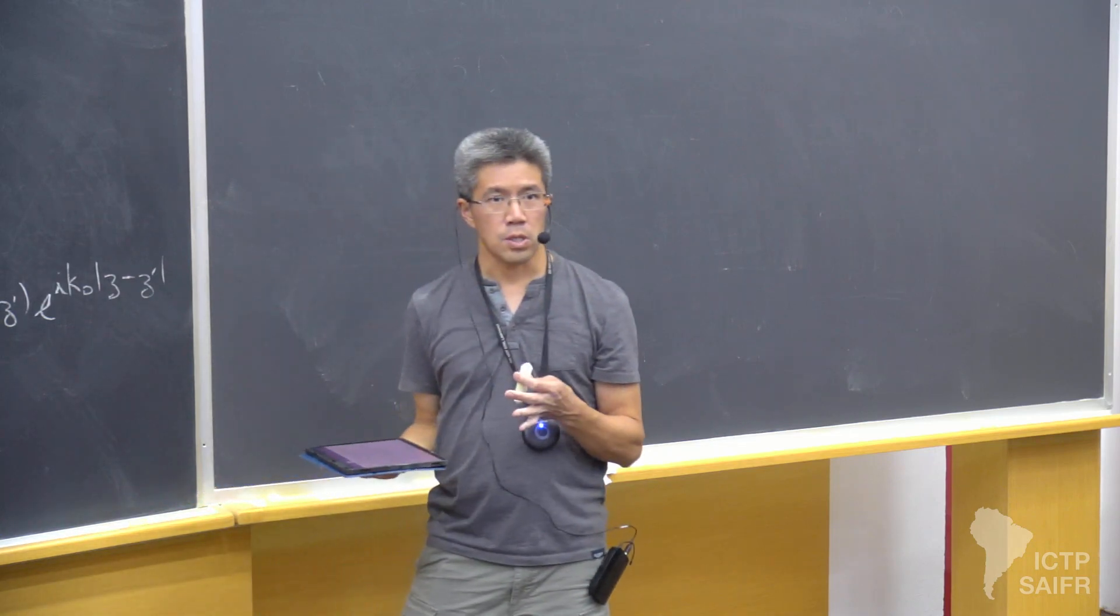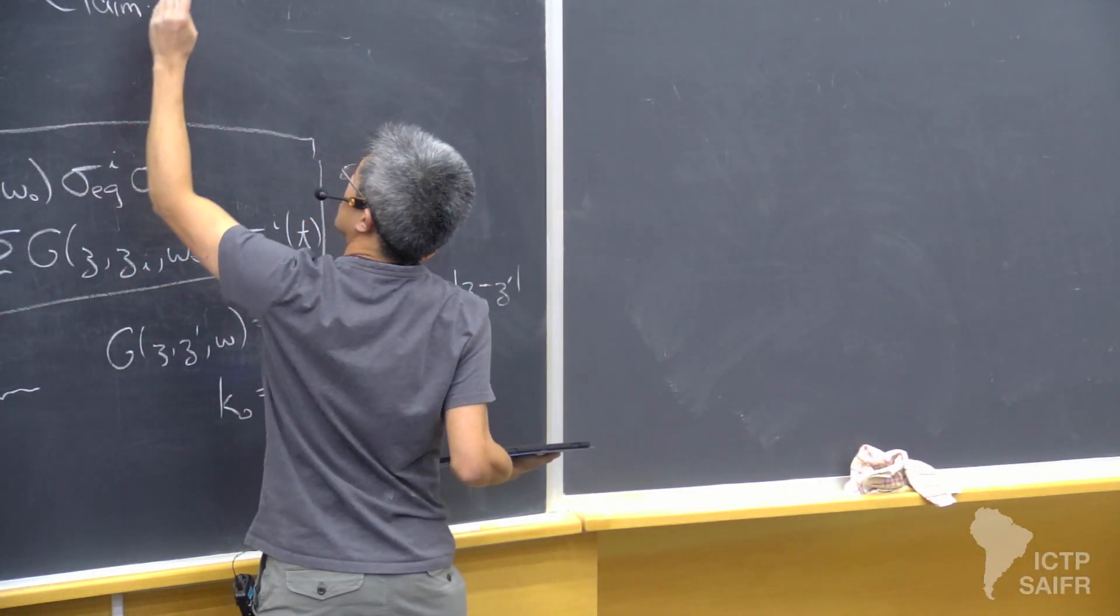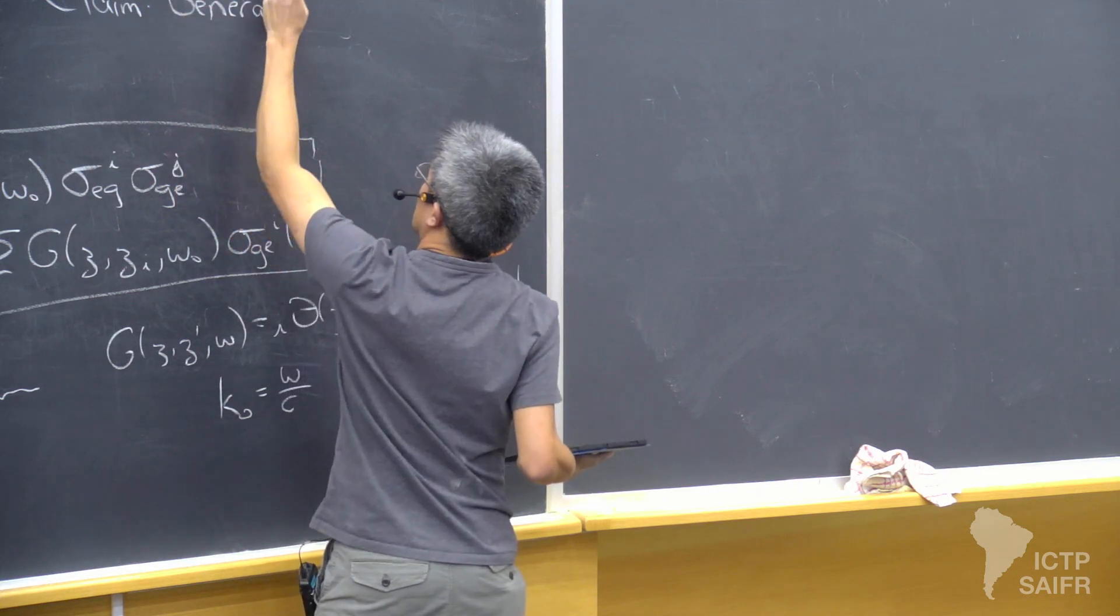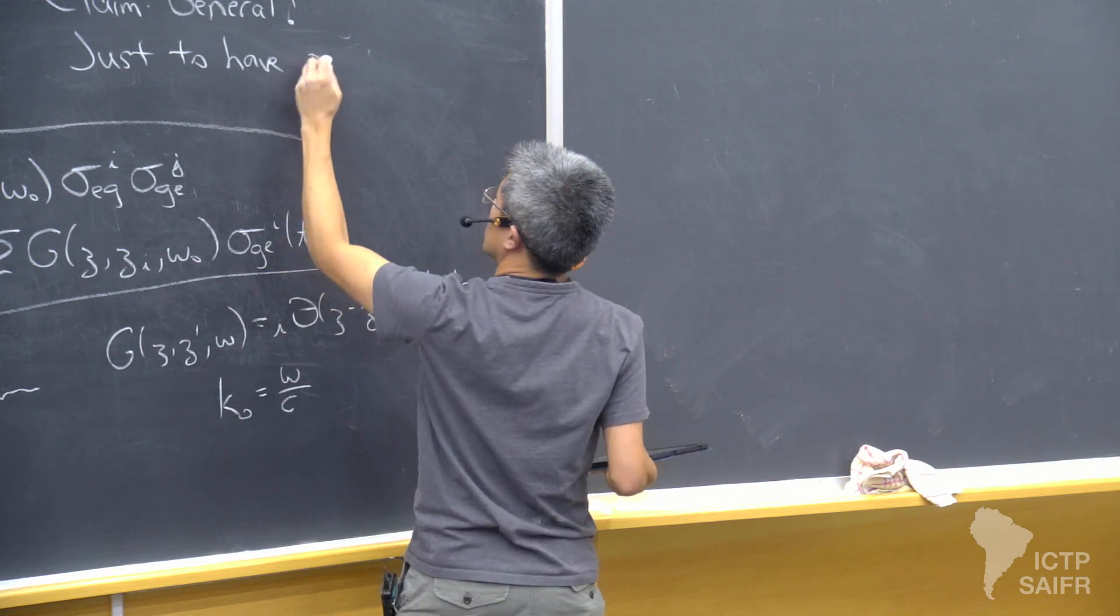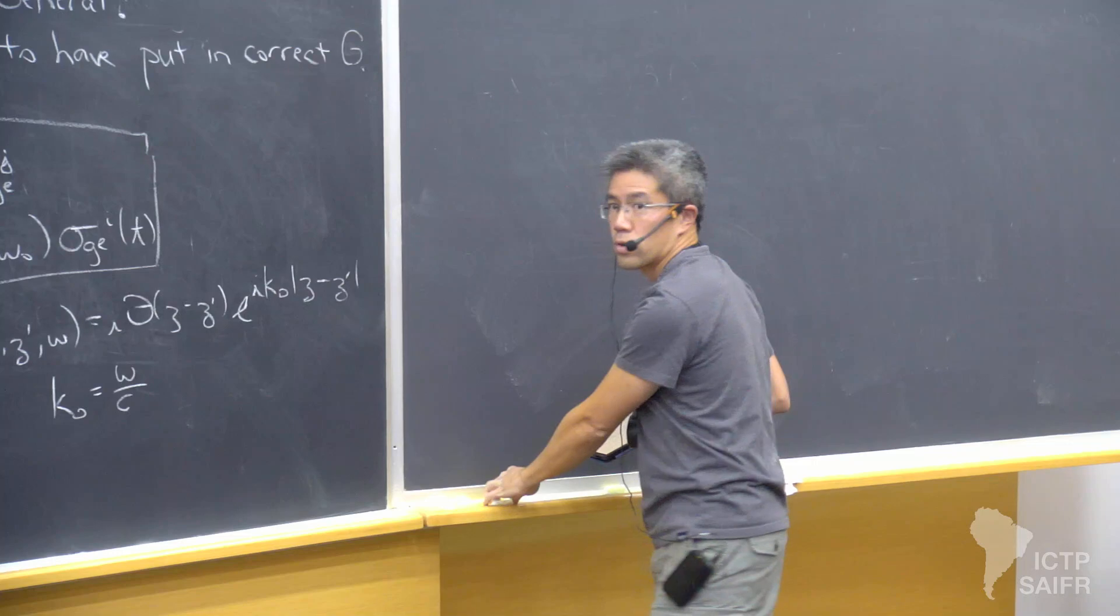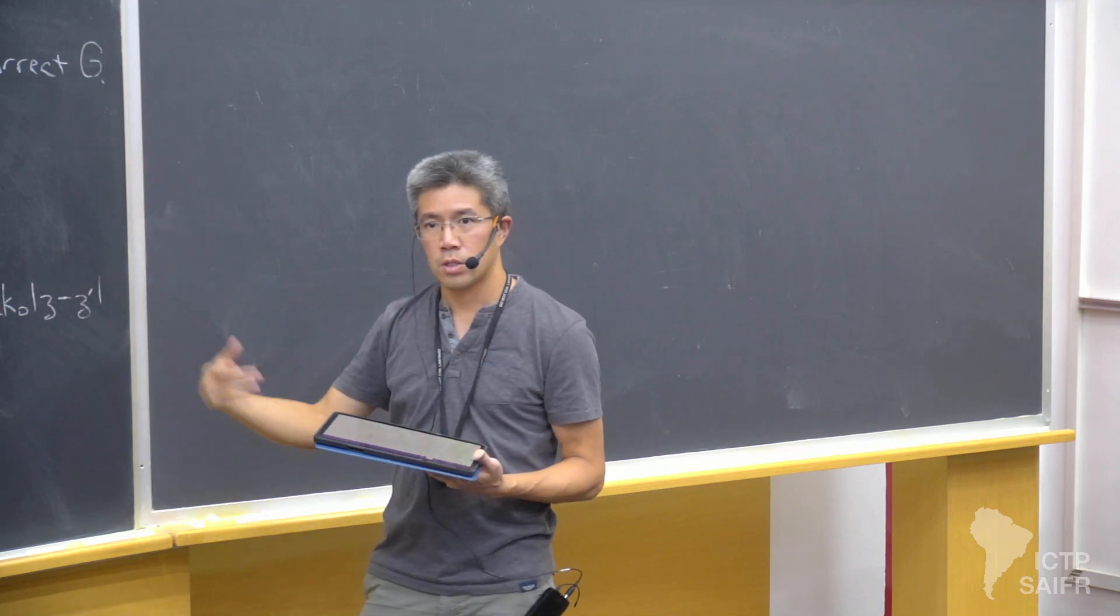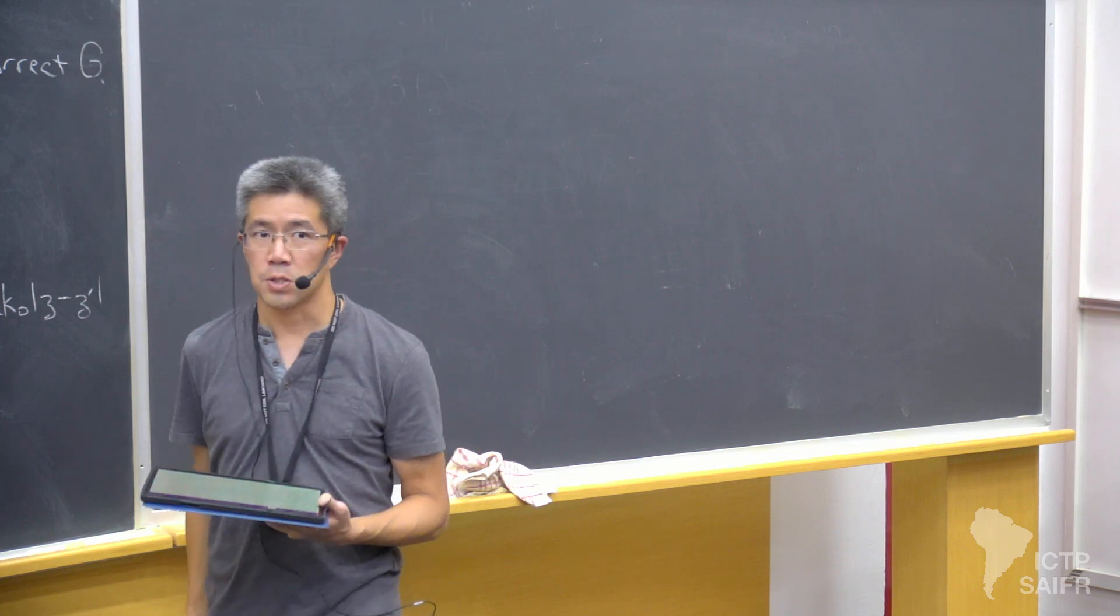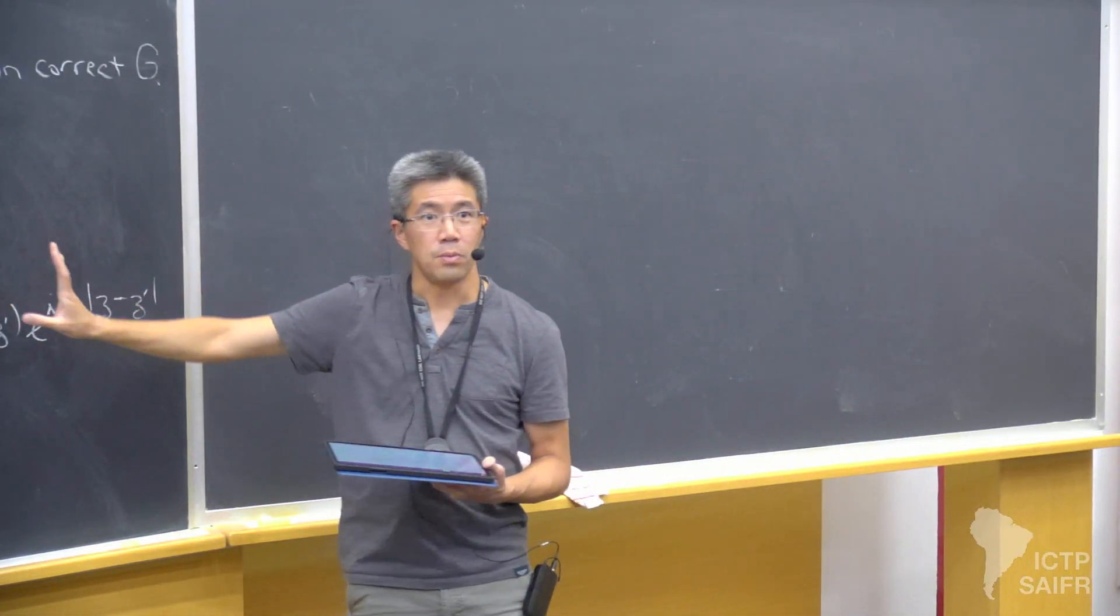So one reason I presented this chiral waveguide model is because it's a simple enough system where you can derive this from first principles. But my claim is that the physics of this should be quite general. So in other words, what this Hamiltonian says is that when I have photons, I can have a process where one atom de-excites and another one excites, where the amplitude of that interaction depends on how a photon or field propagates from one atom to another. So you might guess that this set of equations is true in general. It could be true in 3D for a bidirectional waveguide. The only thing you have to change is you have to put in the correct Green's function for that electromagnetic environment.